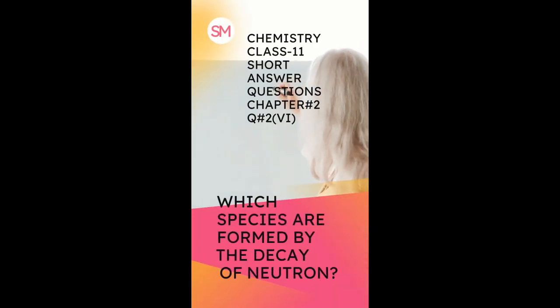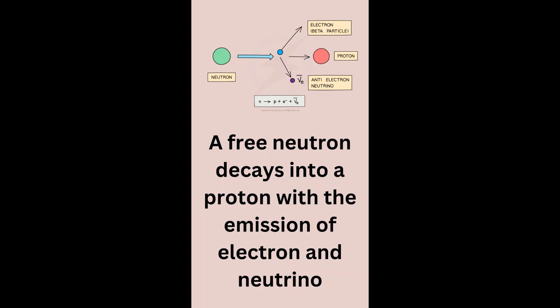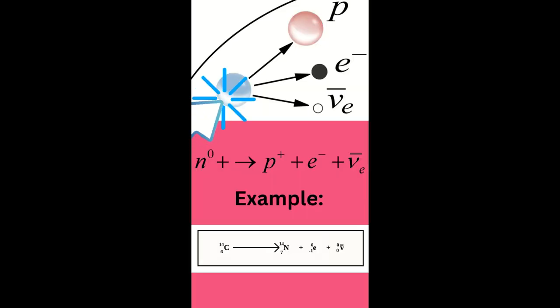Review question number 2 part 6. Which species are formed by the decay of neutron? A free neutron decays into a proton with the emission of electron and neutrino. Neutron decays into a proton, electron, and neutrino.